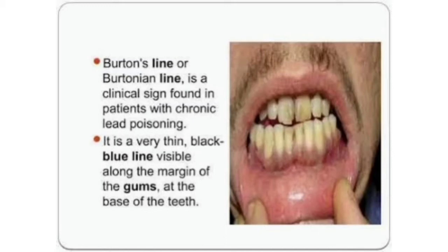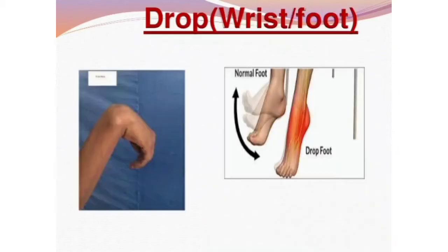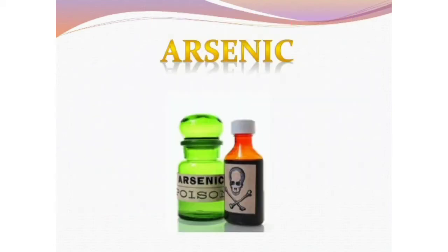This picture shows Barton's line clearly — blue lines on the gum. These blue lines on the gum indicate that the patient has chronic lead poisoning. The next symptoms are wrist drop and foot drop: the left side shows wrist drop and the right side shows foot drop.